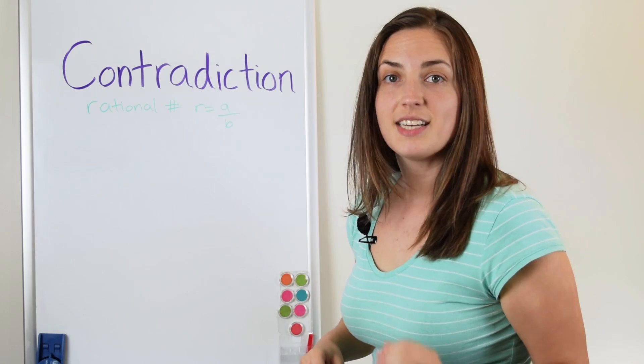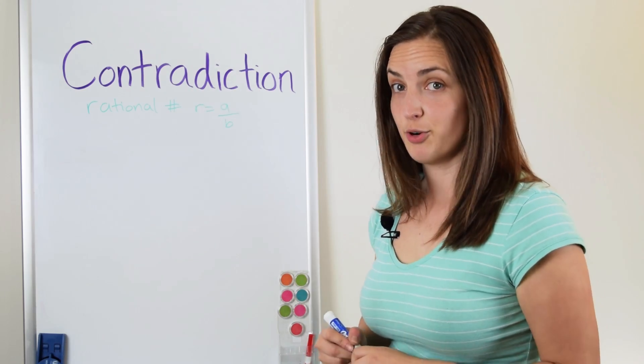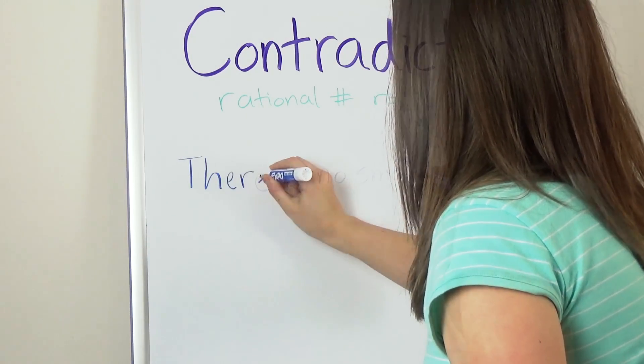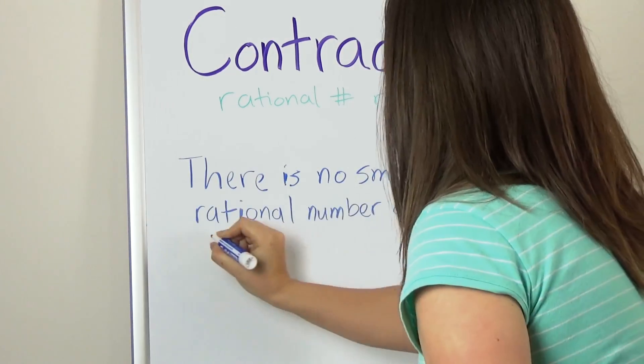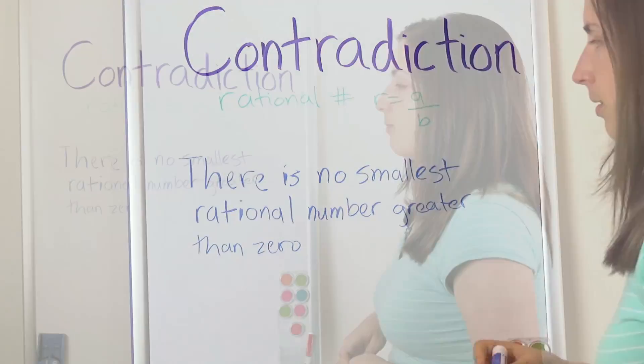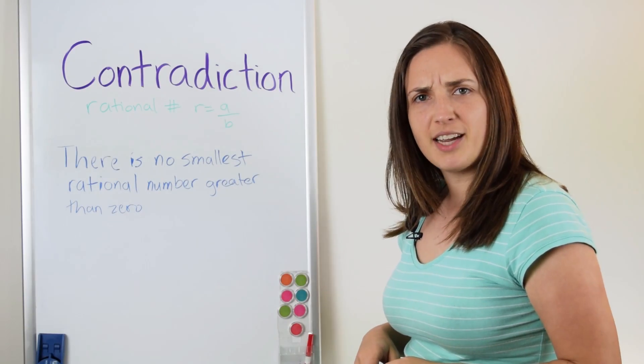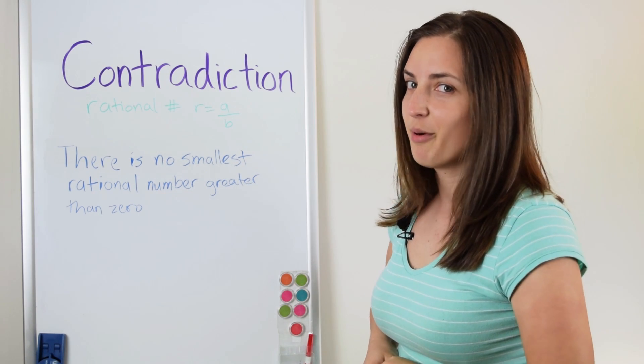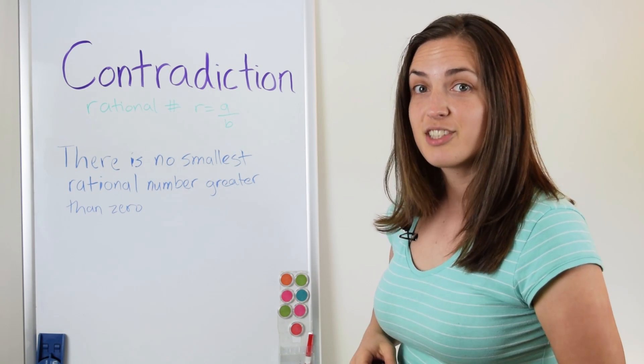So let's write down the statement that we want to prove. There is no smallest rational number greater than zero. Interesting, right? You might think, sure, I can find a smallest rational number, but you can't. And here's the proof.